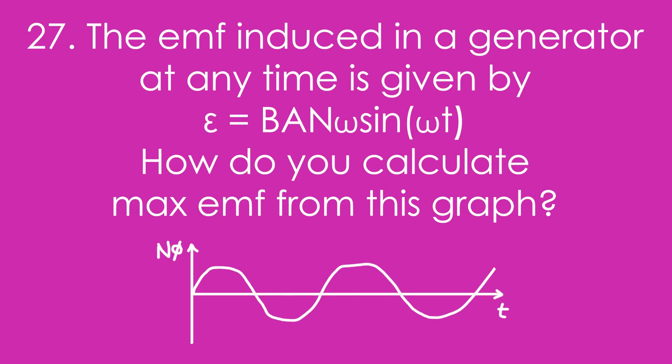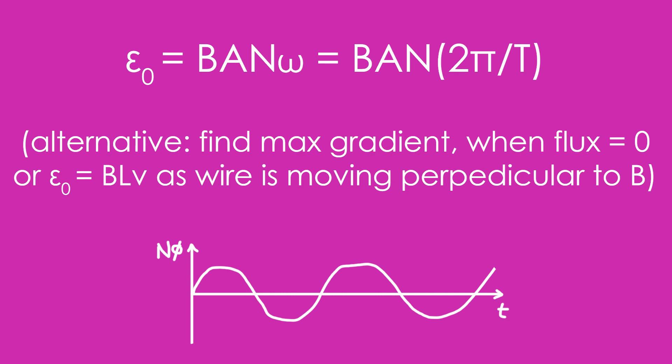Question 27: The EMF induced in a generator at any time is given by ε = BANω sin(ωt). How do you calculate the maximum EMF from this graph? Maximum EMF ε₀ equals BANω — we just drop the sin(ωt). We can get ω from 2π divided by the time period from the graph. Similar to SHM, an alternative is to find the maximum gradient, which counter-intuitively occurs when flux equals zero. Another alternative is to use EMF = BLv, since the wire moves perpendicular to the field at that point.